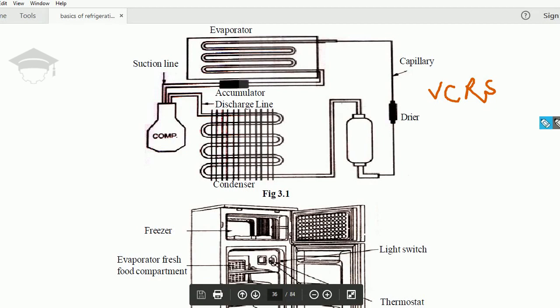In this video I will be explaining the working of a domestic refrigerator. Irrespective of any manufacturer, the refrigerator works on a vapor compression refrigeration system cycle, and this is the general schematic diagram of the domestic refrigerator.